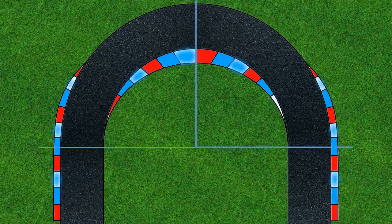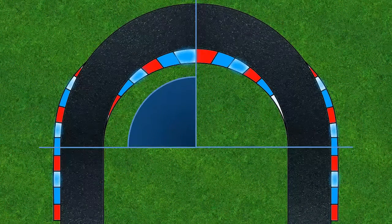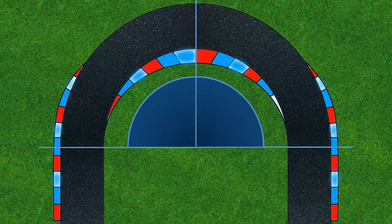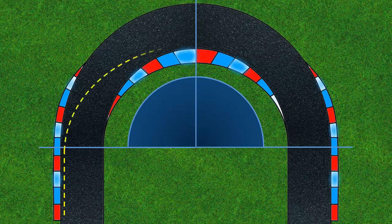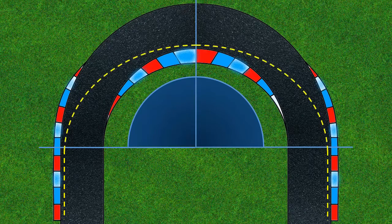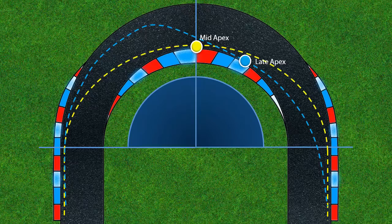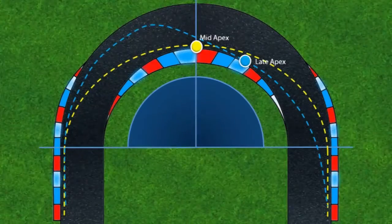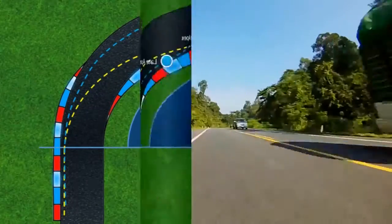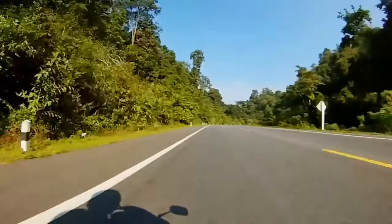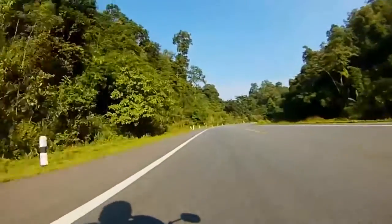A constant radius corner is simply a corner where the radius does not change. It's essentially a symmetrical corner, and whether it's a 90-degree corner or a 180-degree hairpin, it's the same radius from entry to exit. For overall corner speed, a midpoint apex is best. For faster exit speed, a later apex is better. Let's look at it on the road.